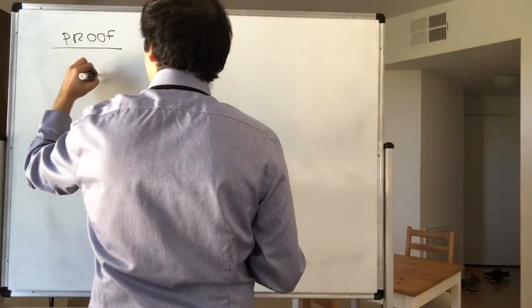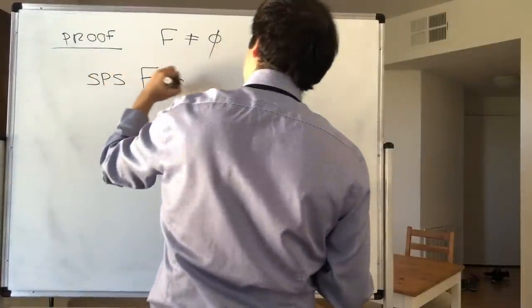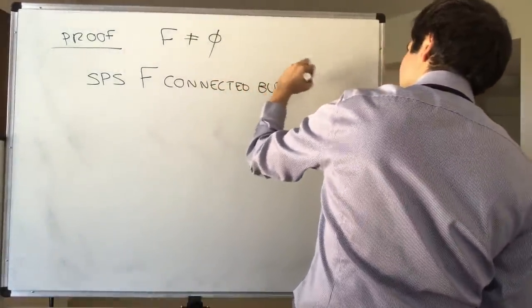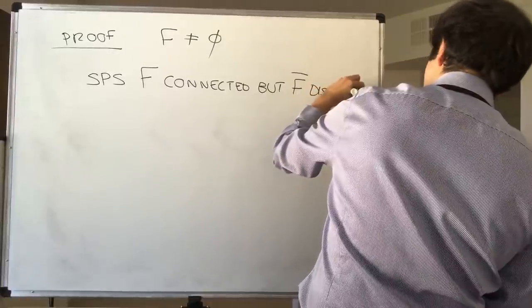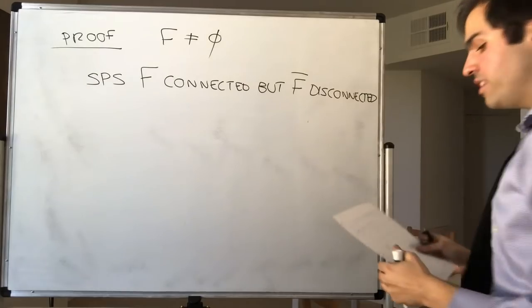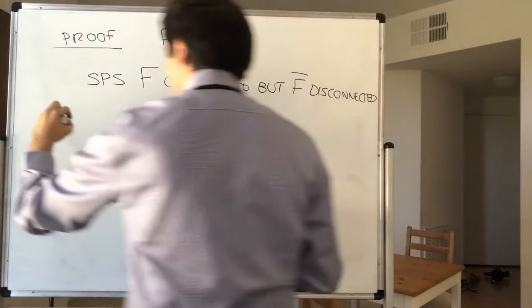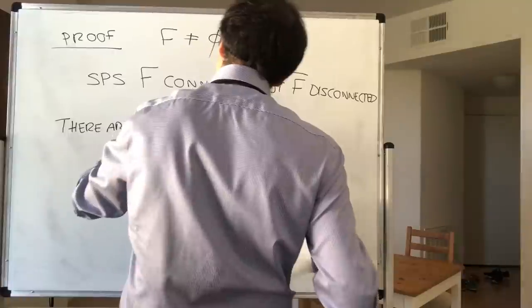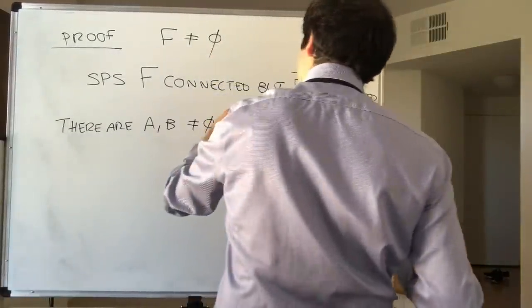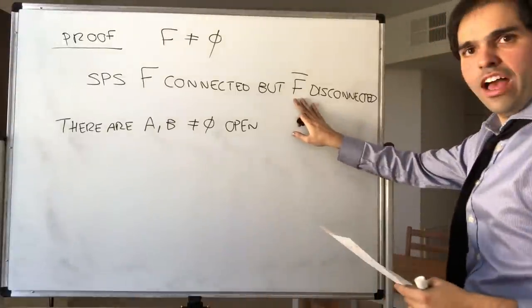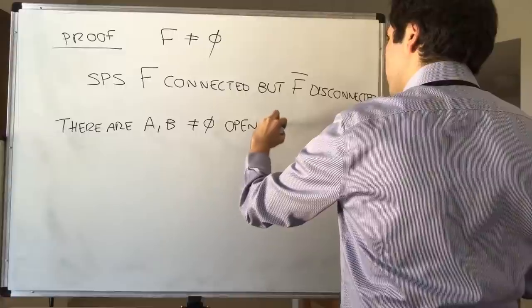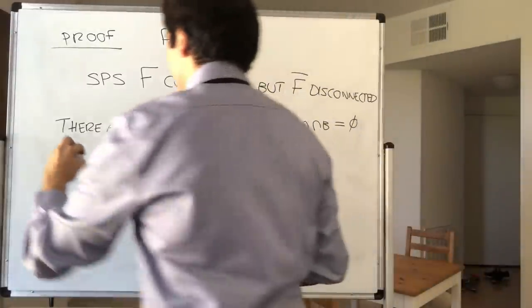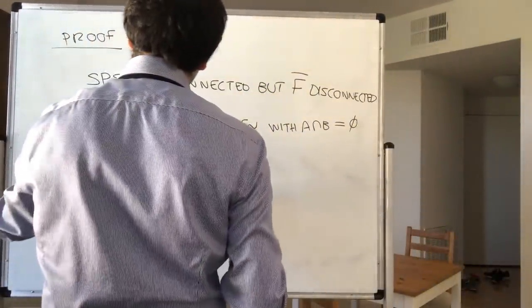Suppose by contradiction that f is connected but f̄ is disconnected. What this means is we have a separation of f̄: there are sets A and B, non-empty, open relative to f̄, with A ∩ B = ∅ and A ∪ B = f̄.